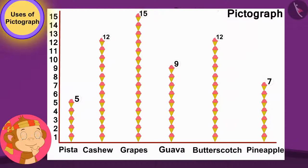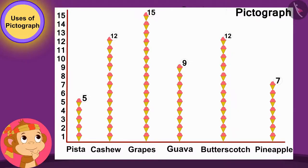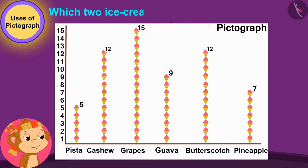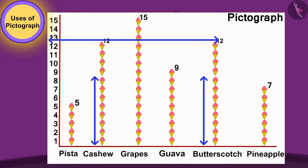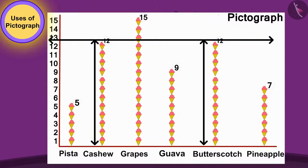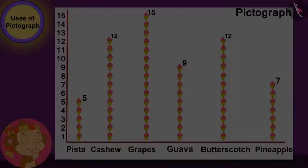Now, Babban looked at the pictograph once again and thought, these two ice creams have been liked by exactly the same number of people. Children, can you see the pictograph and find out which two ice creams Babban is thinking about? Well done, children, your answer is absolutely correct. Cashew and butterscotch ice cream lines are of the same height, therefore the number of people who like cashew and butterscotch ice cream is the same.